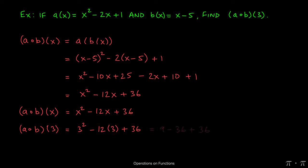And if we clean this up, 3² gives us 9. -12 times 3 gives us -36. And then the positive 36 comes along. This should be easy. The negative and the positive 36 cancel each other out, leaving behind just the number 9. So what that means for us is (a∘b)(3) = 9.